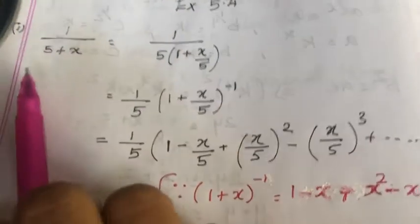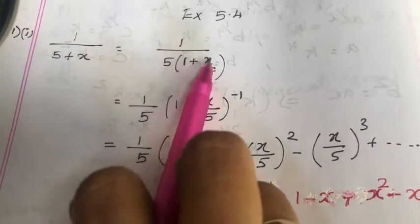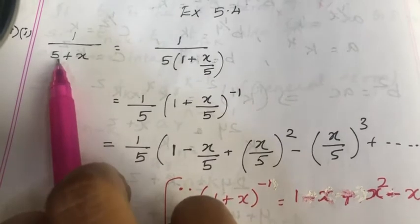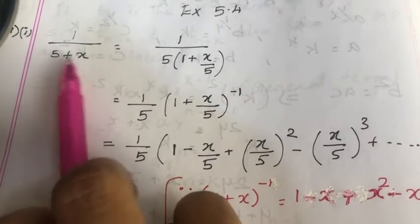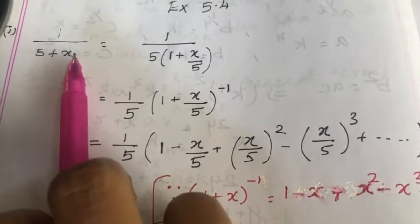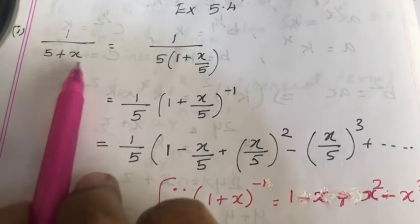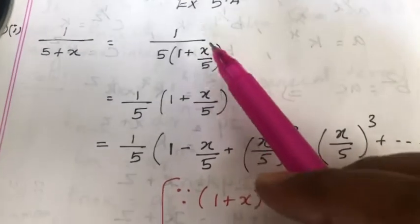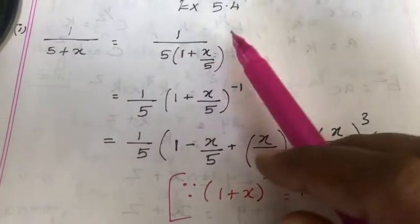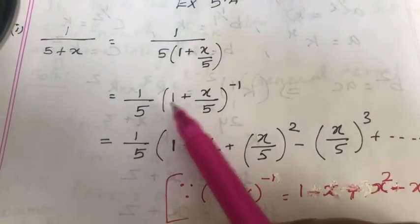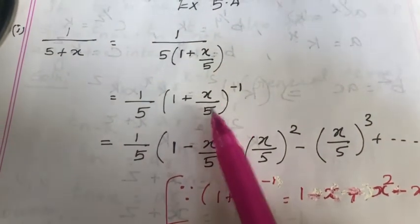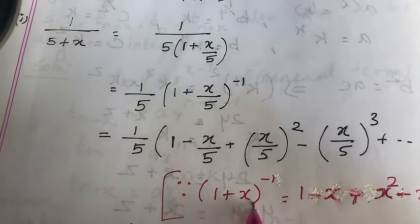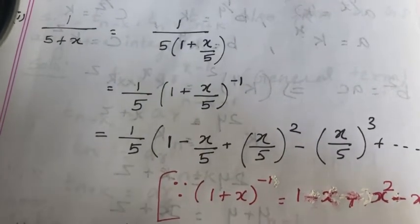We can take 5 as common: 1 divided by 5 into (1 + x/5). If I take 5 outside, this will become 1 and here it is x/5. So, (1/5) · (1 + x/5). Now, let us move the term on the denominator to the numerator: (1/5) · (1 + x/5)^(−1). Now we can expand this — that is (1 + x)^(−1) under this condition.